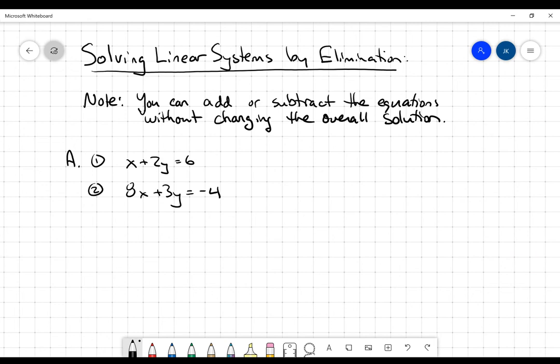Now, what I want to do is I want to combine these equations in such a way that gets rid of one of the variables. Because if I've got an equation with just one variable in it, it's pretty easy to solve. Now, what I can do here is I want to get the coefficients the same. So I'm going to take equation 1, and I'm going to multiply it by 8.